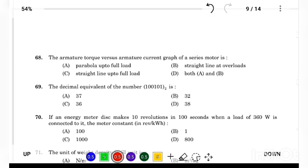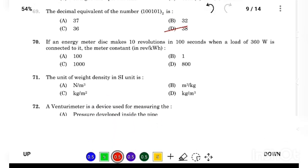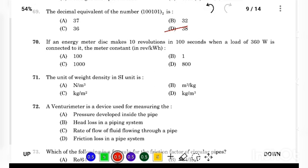The armature torque versus armature current graph of a series motor is Answer Option A, parabola up to full load. The decimal equivalent of the number 101101 is Answer Option C, 38.